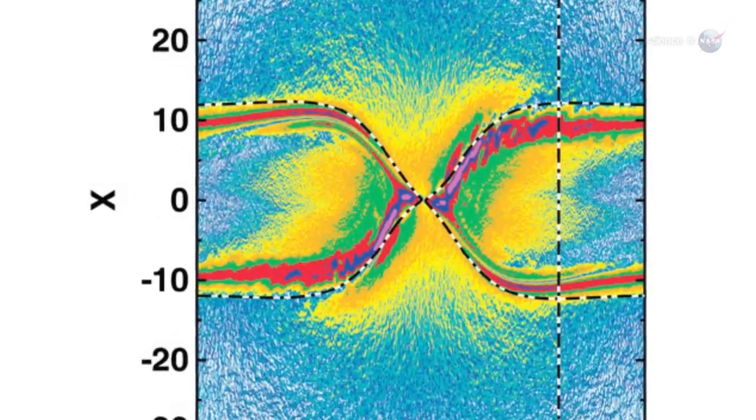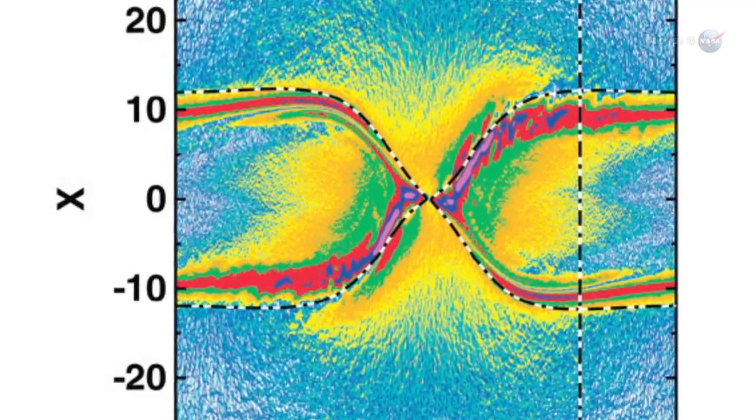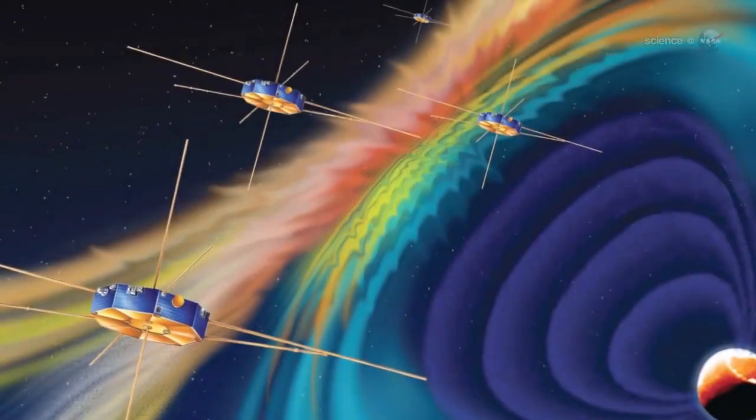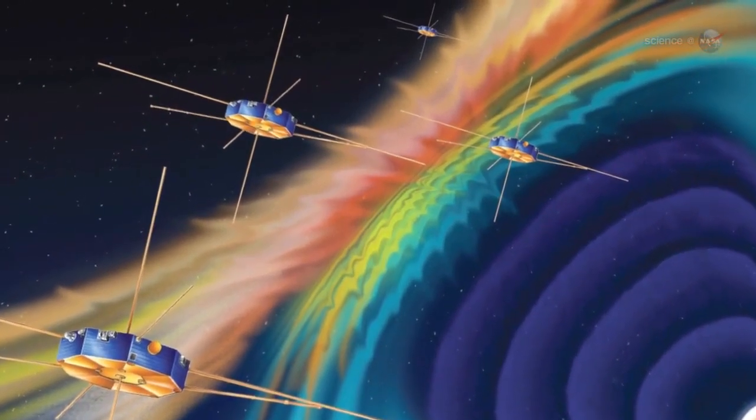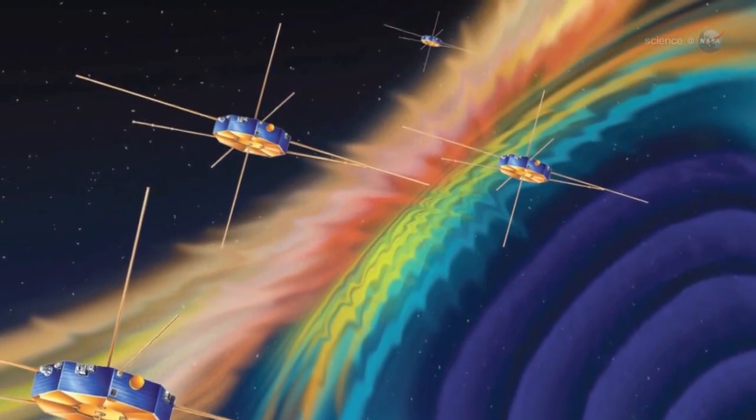A single spacecraft, properly instrumented, can make these measurements. This means that a single member of the MMS constellation, using the diagnostics, can find a portal and alert other members of the constellation.